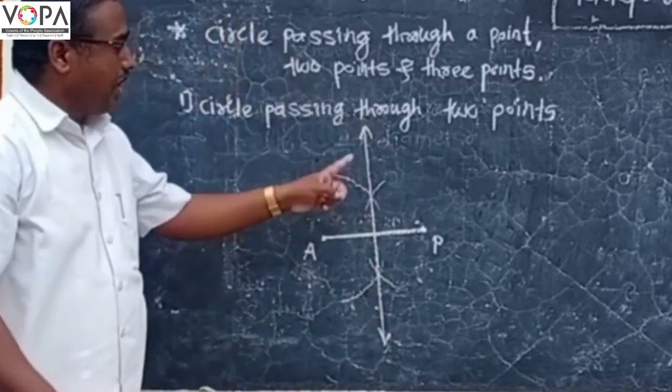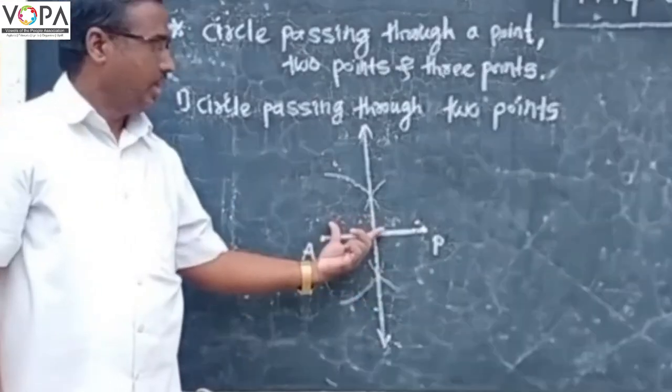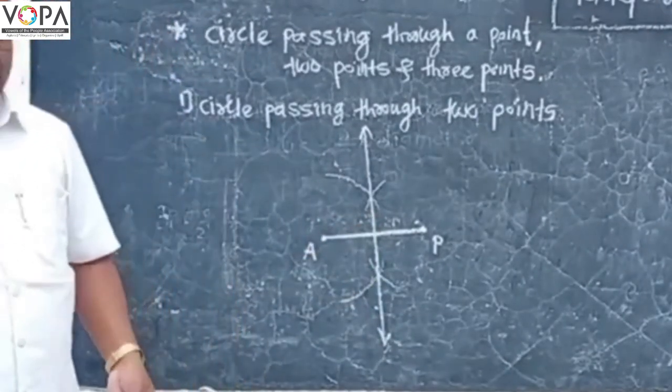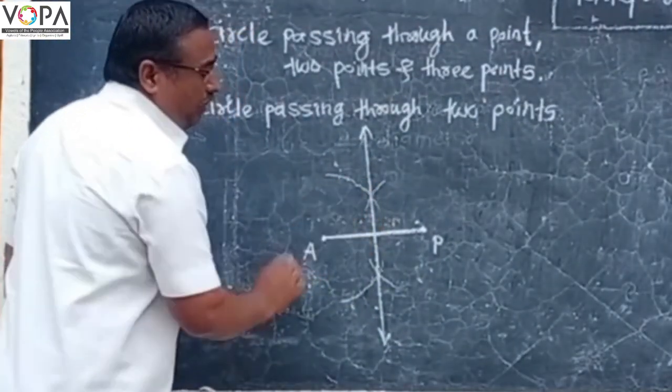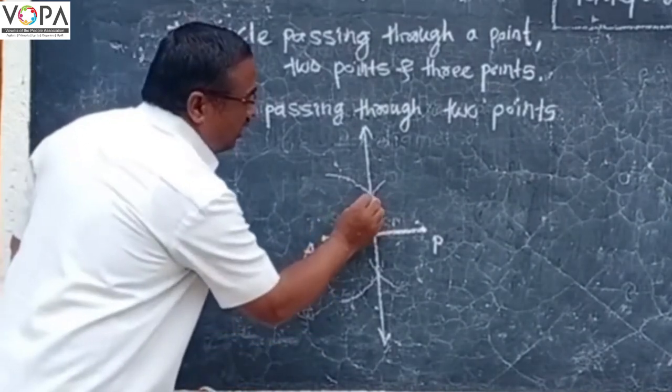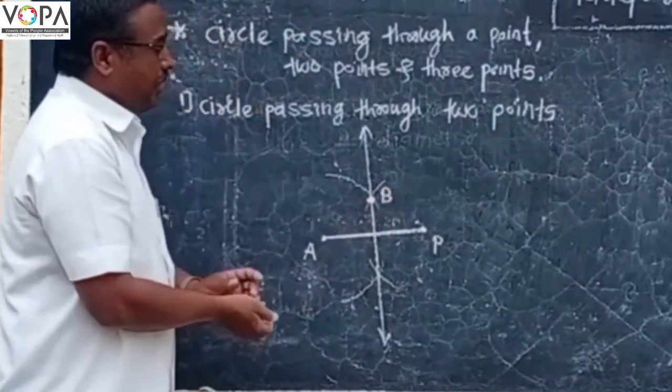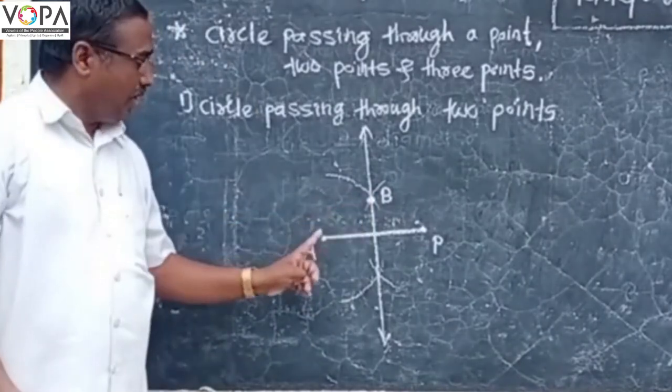This is the perpendicular bisector of segment A-P. On this perpendicular bisector, take a point B. Point B is equidistant from A and P.